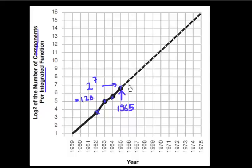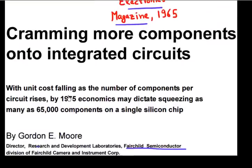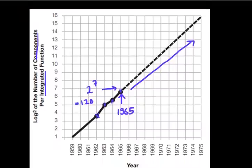So what he predicted was this trend will continue and what he predicted in this article was by 1975, you will have 65,000 components. Or looking at this graph, what he predicted was assuming this law will continue by 1975, you'll have two to power 16 or approximately 65,000 components on one particular chip.